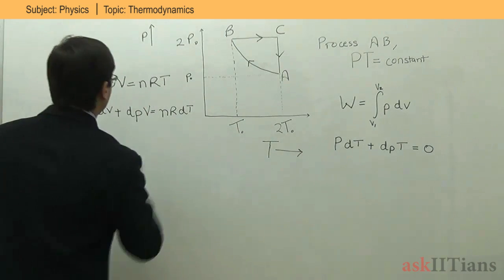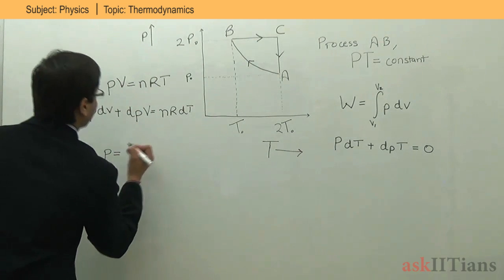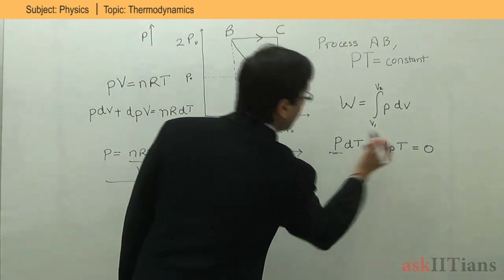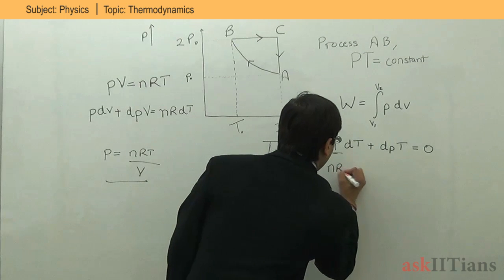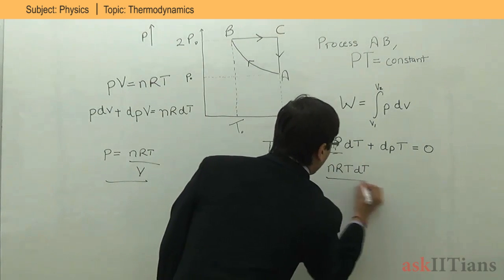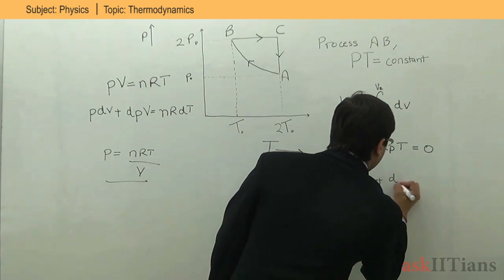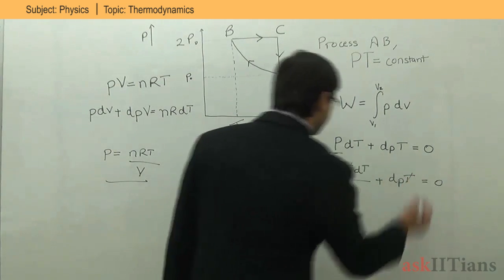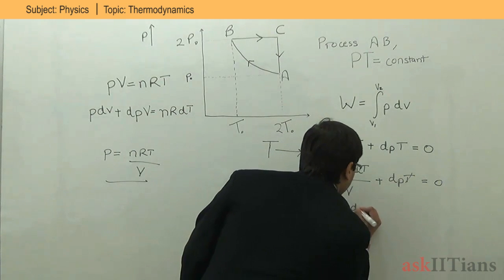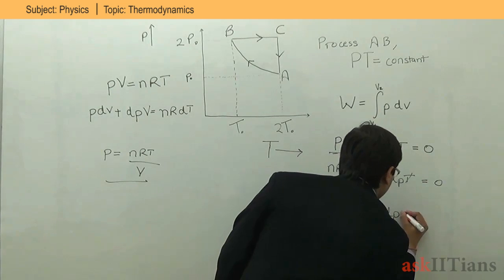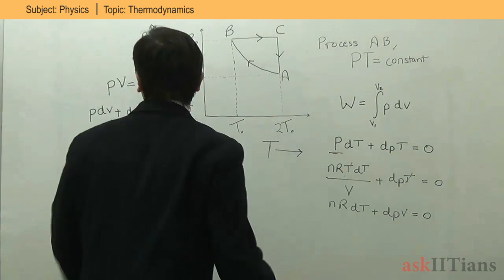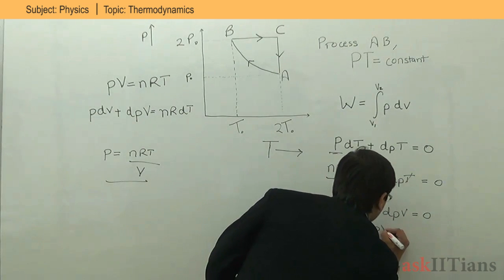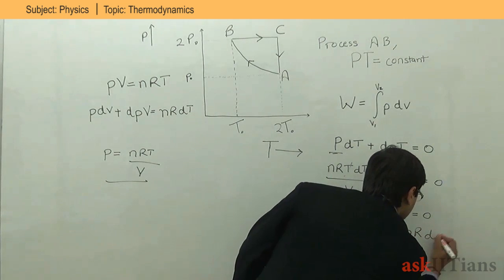Now substitute the value of P from the ideal gas equation: P = nRT/V. Substituting into the differentiated PT = constant equation gives nRT dT / V + T dP = 0. Cancelling T, we get nR dT/V + dP = 0, which allows us to express V dP = −nR dT.